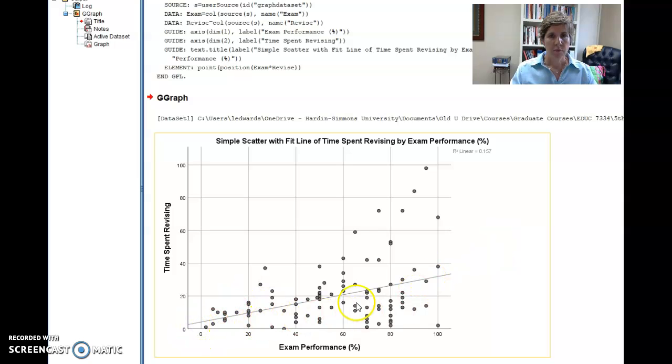So there's a couple of things you get from your scatter plot. Obviously you get your line of best fit, and you get your coefficient of determination. So it doesn't say coefficient of determination, but R squared is your coefficient of determination. So this value right here, 0.157, tells us that there is a 15.7% common variance or covariance between these two variables.